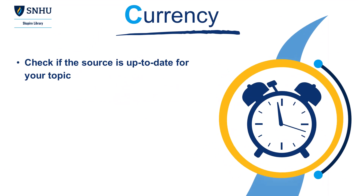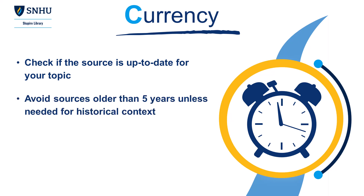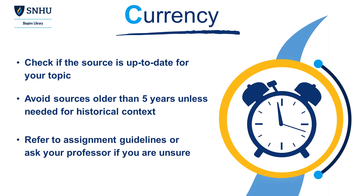Currency. Check if the source is up to date for your topic. For instance, medical research requires recent sources, while historical research may not. Verify the publication date or last update of your source. In general, avoid sources older than 5 years old unless needed for historical context. Always refer to your assignment guidelines or ask your professor if you are unsure of how current your sources should be.